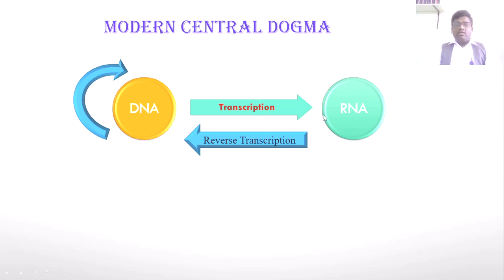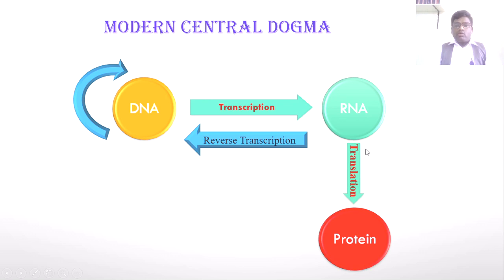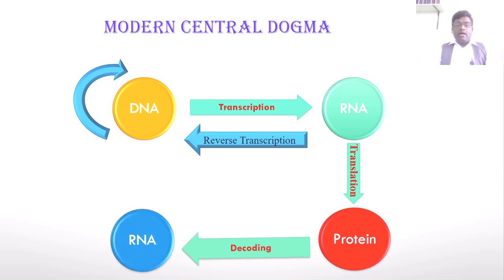After decoding the RNA language, RNA is translated into protein by the process of translation. Scientists have also successfully converted proteins back, decoding them into RNAs. When we go for a genomic library or cDNA library, we construct DNA from mRNA — we can construct DNA from RNA in the construction of a cDNA library by decoding the DNA.